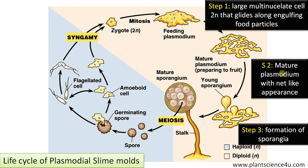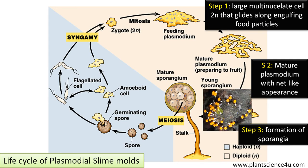Step 3: Formation of sporangia. From the thallus, certain structures arise which have a stalk and a head — these are called sporangia. Many nuclei move to the head region. Many sporangia are produced, just like in fungi. Each sporangium has a long stalk and a head.